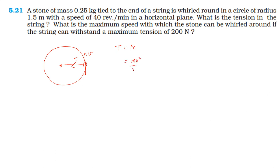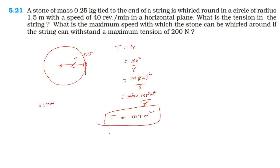The centripetal force is mv² / r. Since v = rω, substituting gives m(rω)² / r, which simplifies to mrω². So the tension T equals mrω².